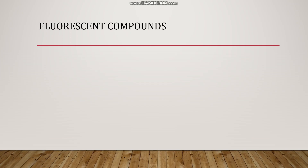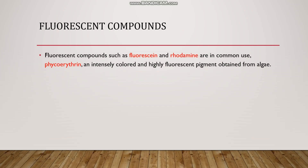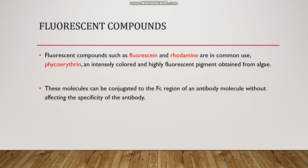Many compounds have the properties of fluorescence. Fluorescein and rhodamine are commonly used. Phycoerythrin is an intensely colored and highly fluorescent pigment obtained from algae species. These molecules can be conjugated to the Fc region, or crystallizable region, of an antibody without affecting the specificity of the antibody.